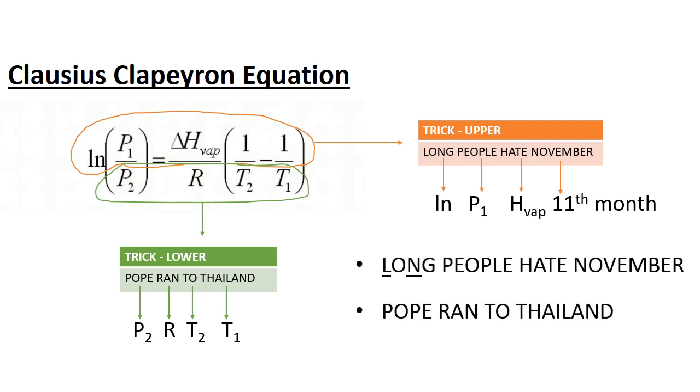So these are the two tricks: Long People Hate November and Pope Ran To Thailand. It's really easy and simple to remember this equation using these two tricks. I hope you all learned the Clausius-Clapeyron equation very easily. To get more such tricks, just subscribe to our channel.